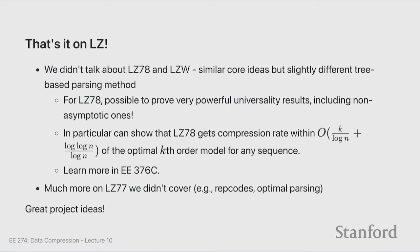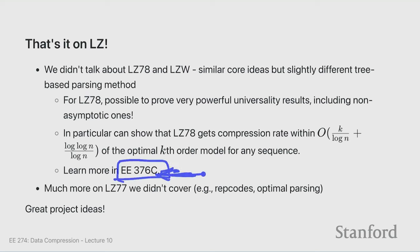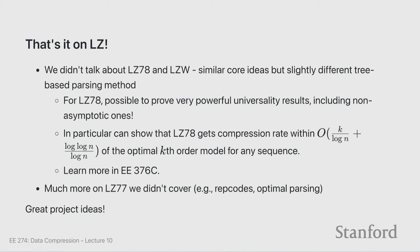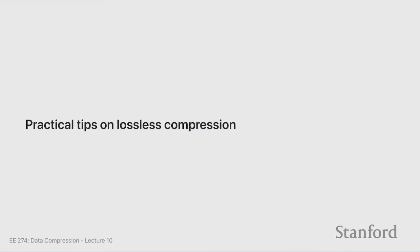There are many LZ77-based compressors: ZStandard, Zlib/Gzip, Brotli from Google, LZ4, Snappy from Google — each with their own compression levels. We didn't cover LZ78, which is interesting theoretically and covered in depth in Professor Saki's EE376C course. Things like rep codes and optimal parsing are good project ideas. LZ77 is a great compressor, but every compressor we've taught seems optimal in some sense — Huffman was great, context-based arithmetic coding was great. So how do you actually think about data compression?